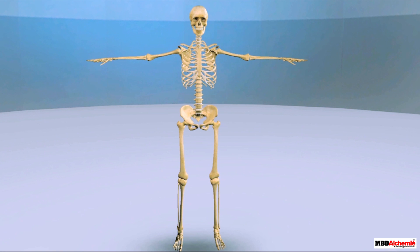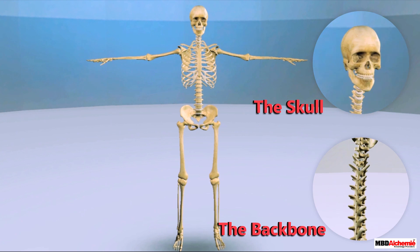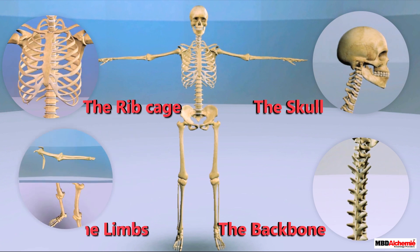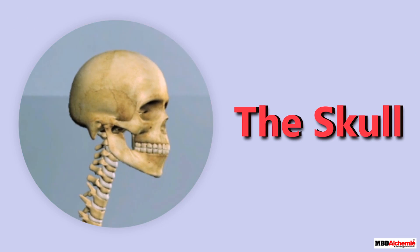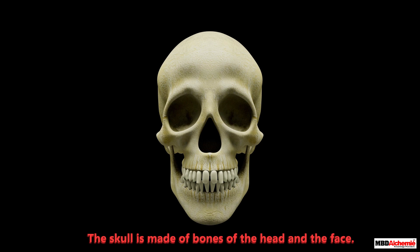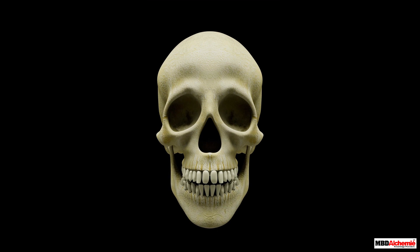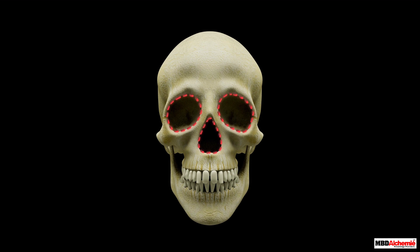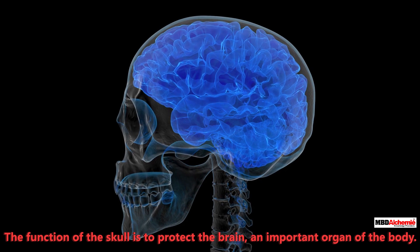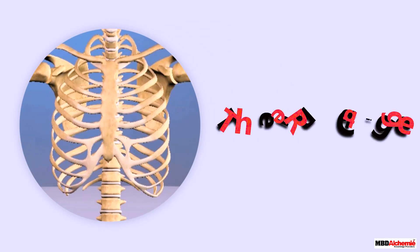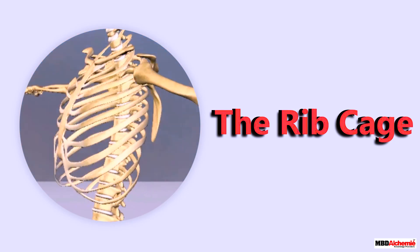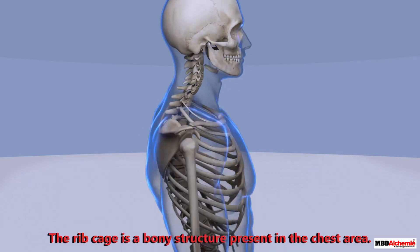The skeleton comprises four main parts: the skull, the backbone, the rib cage, and the limbs. Let us first learn about the skull. The skull is made of bones of the head and the face. All the bones of the skull are immovable except the jaw. There are depressions or holes in the skull for eyes and nose. The function of the skull is to protect an important organ of the body, which is the brain.